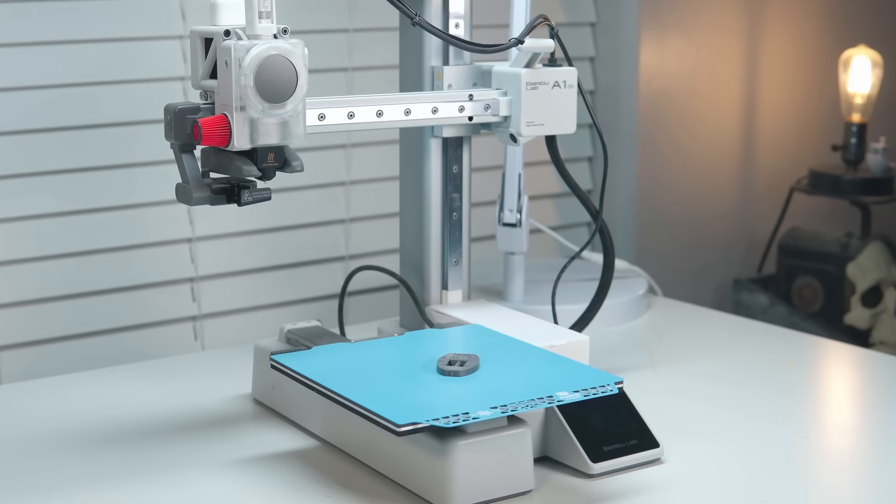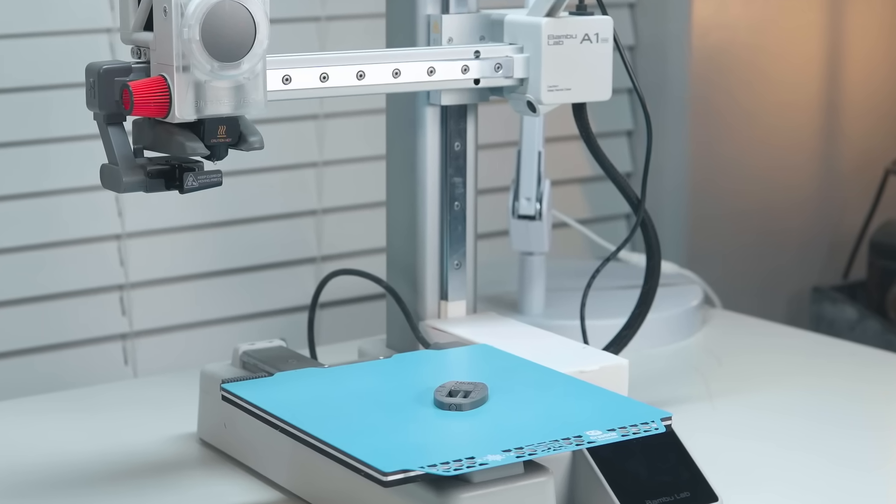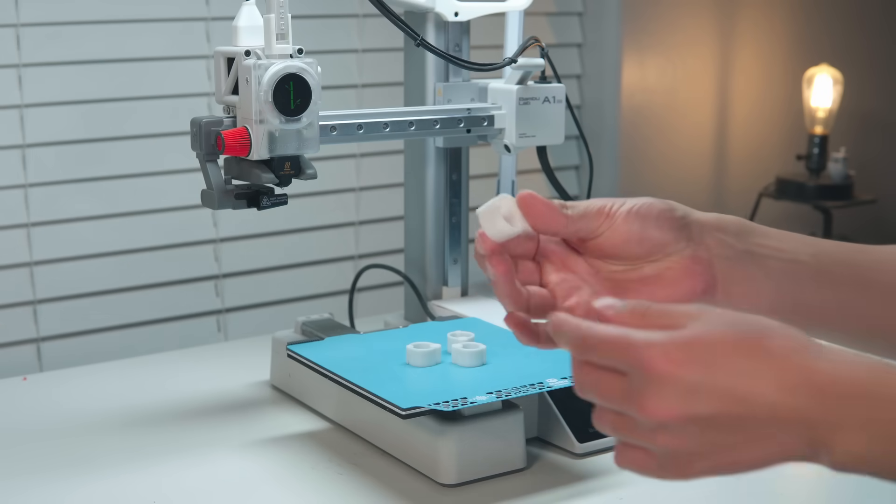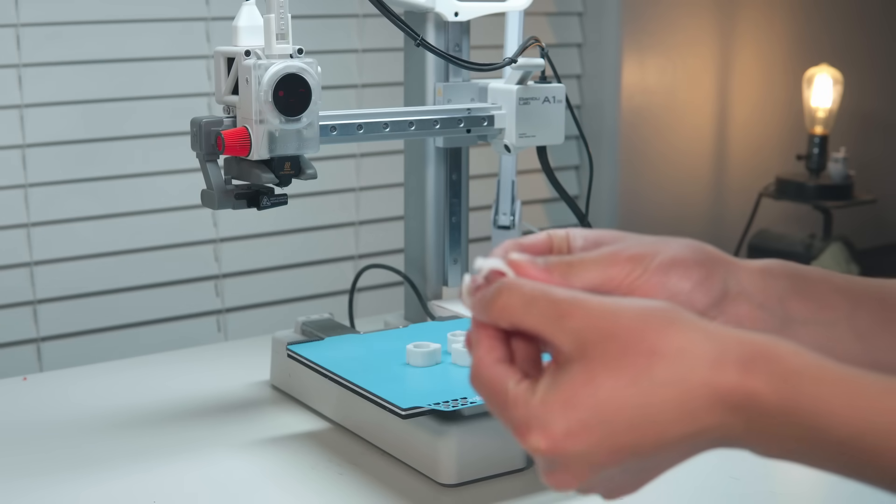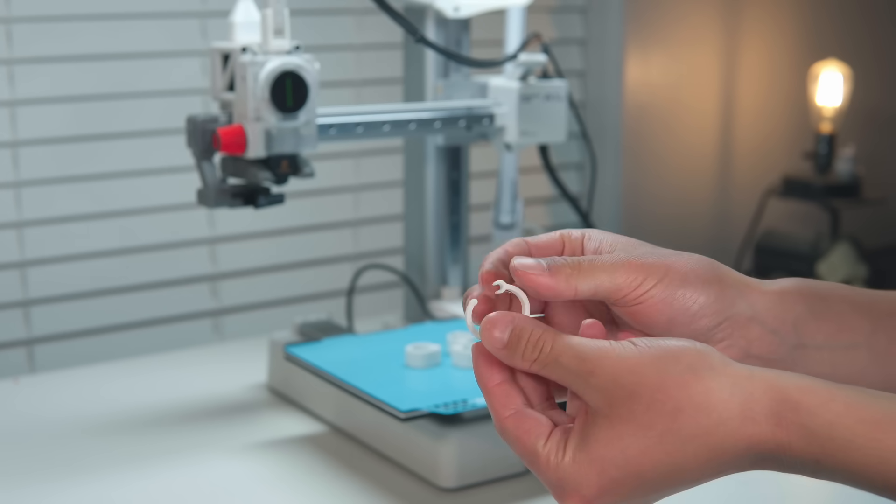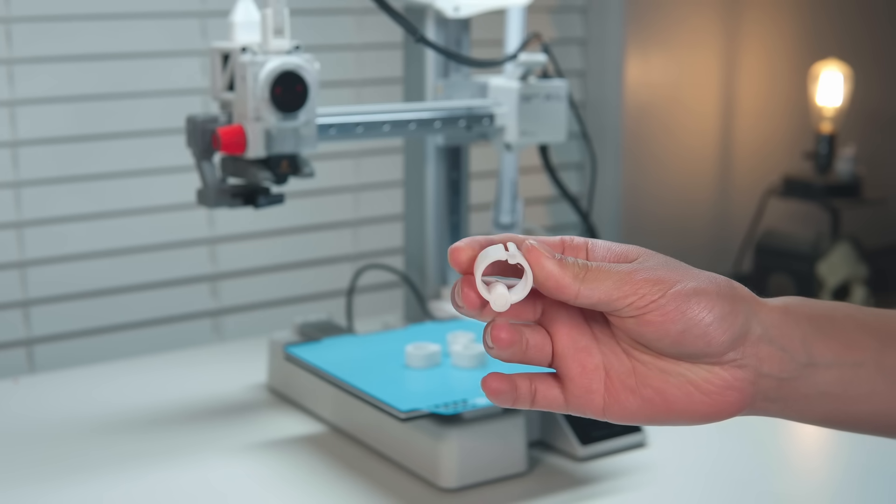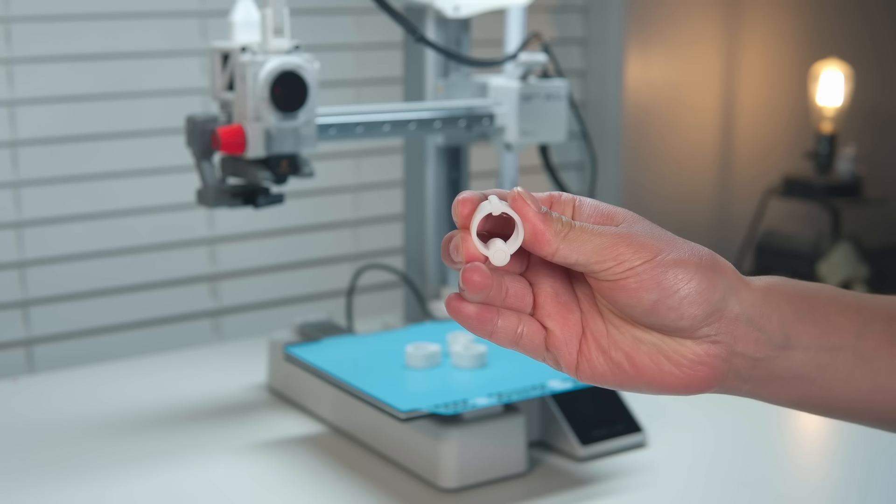All right, this next category is the small under one hour prints, but just because they're small does not mean that they are not useful, and we're going to start off with an absolute banger of a quick print. This is the snap cable clip organizer and it only takes 18 minutes to print out on any of your bamboo printers. These even use less than 5 grams of filament, so if you're really just trying to get rid of that very last bit of filament in the roll, this might be the print that you want.